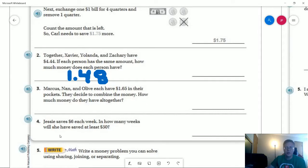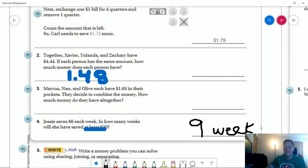So number four, if Jessie saves $6 a week, how many weeks will she, in how many weeks will she have saved at least $50? So if I am counting by sixes, I am going to be able to count eight times to get to 48. So I'm going to need to have, she would have need to work the ninth week as well to save at least $50. So I'm going to switch to the center pin here. So it should be nine weeks. At the end of nine weeks, she will have earned $54.